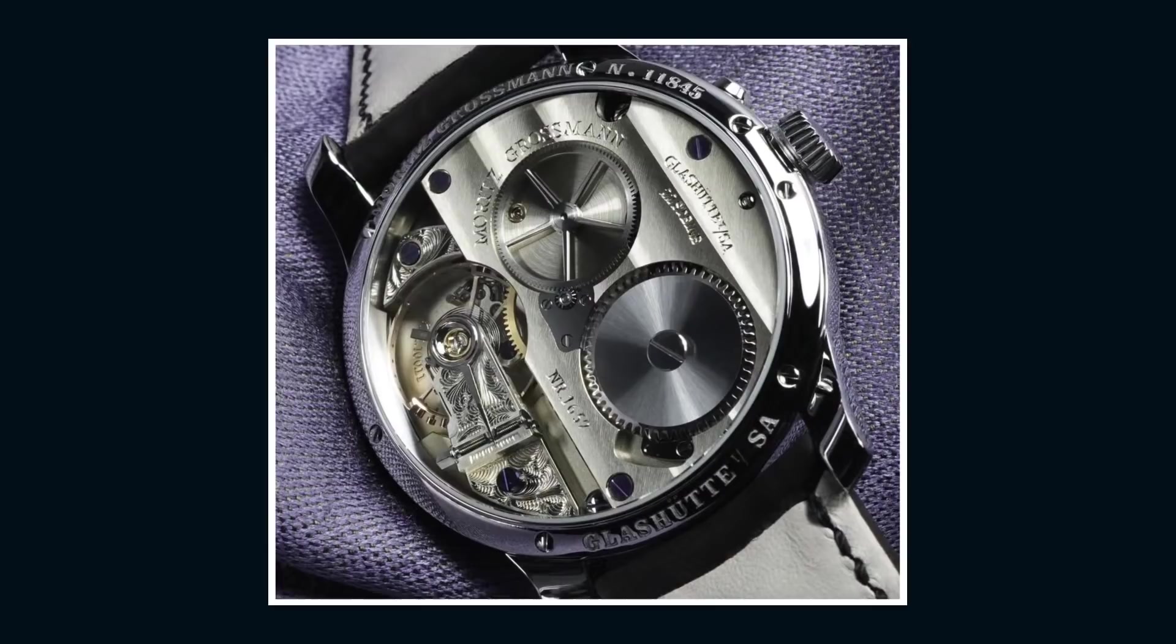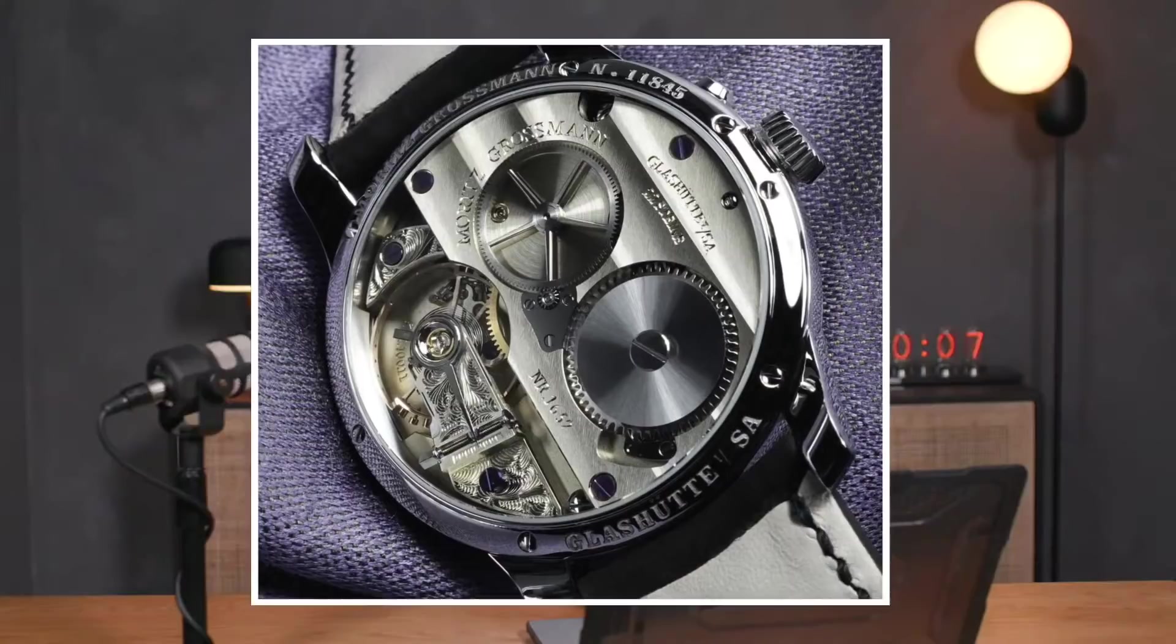We have caliber 100.11. As is the case with all Moritz Grossmann movements, we have freehand engraving on the bridges and plates. We have a lovely broad set of waves, much wider than what you'll find in Geneva. Fired brownish-purple screws. They don't do blued screws. They do this lovely violet-brown that's achieved by firing the screws for less time. We have an over-coil hairspring and, of their own fabrication, a free-sprung balance. Manual wind.